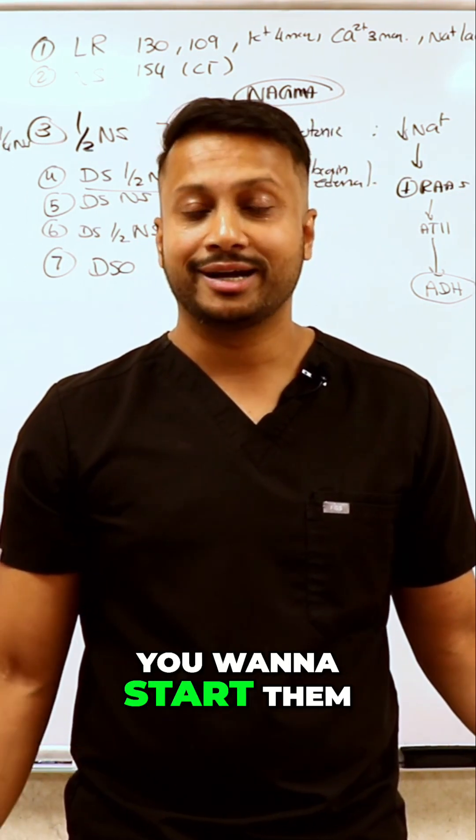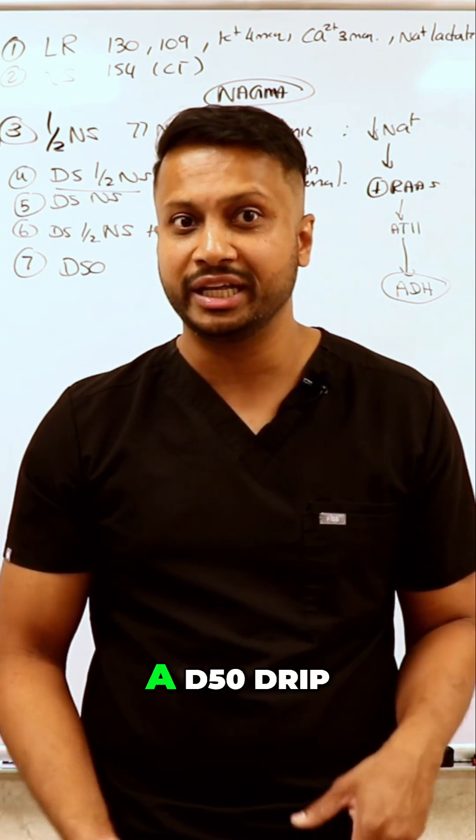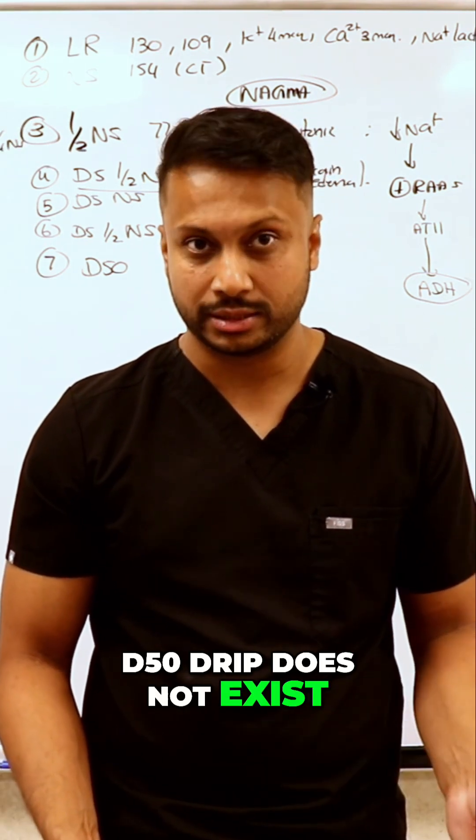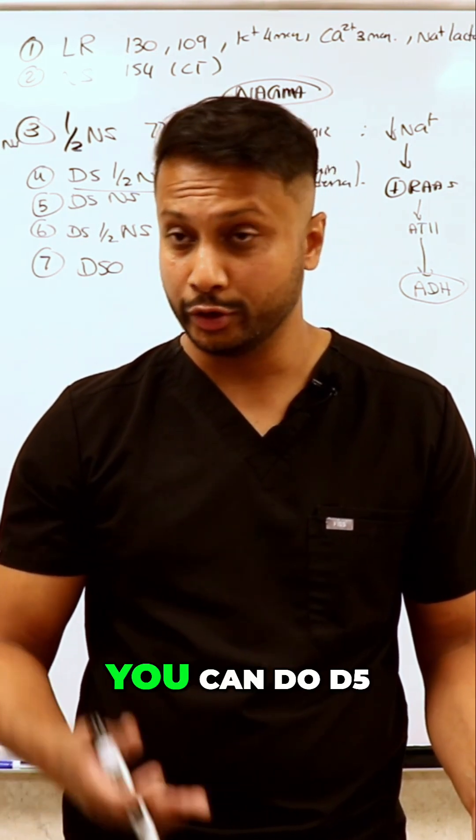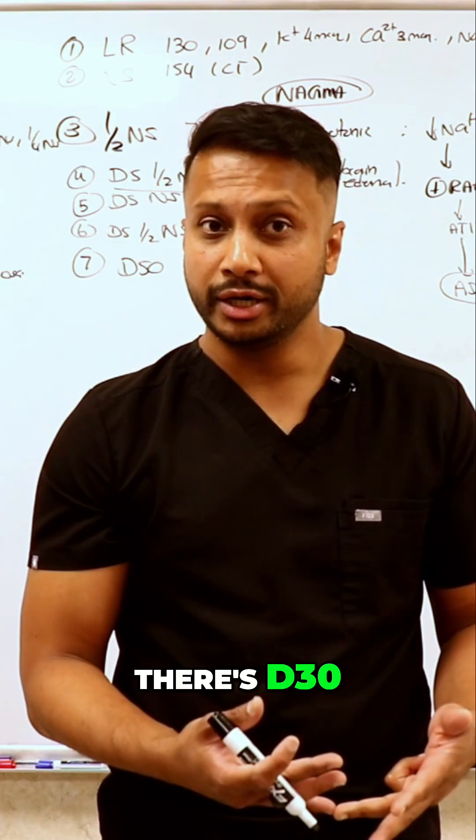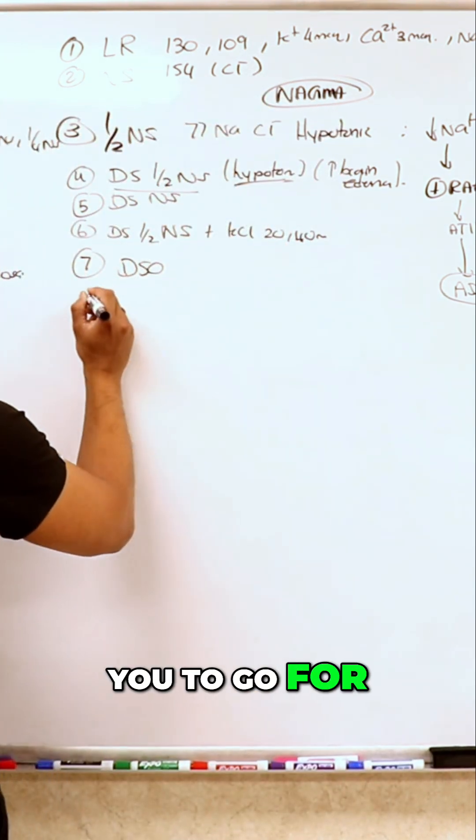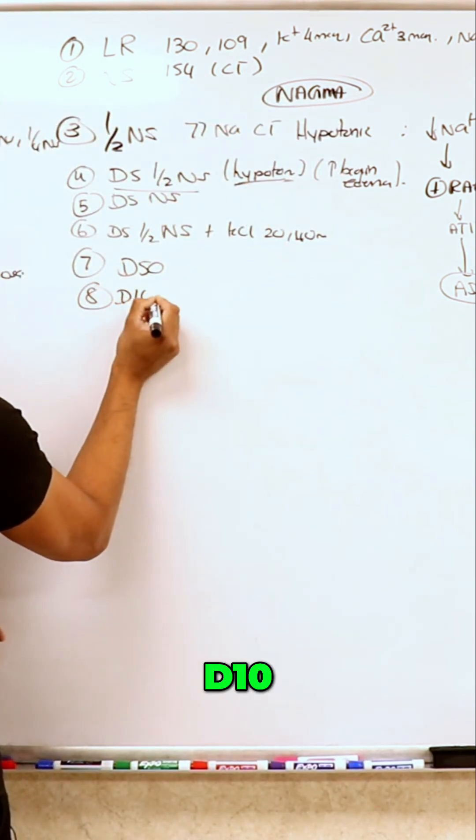You want to start the patient on some form of glucose drip. Now what kind of drip do you want to do? A D50 drip? That drip does not exist. So what drip can you do? You can do D5, you could do D10, you could do D20, there's D30, there's D25, but most of the time it's preferred for you to go for D10.